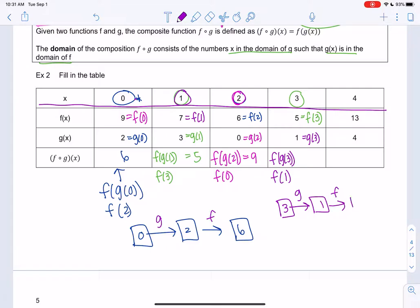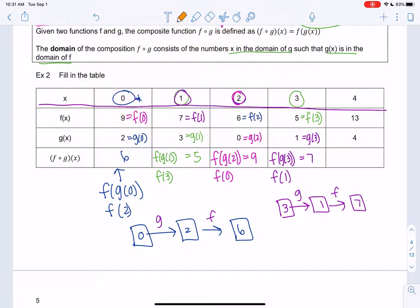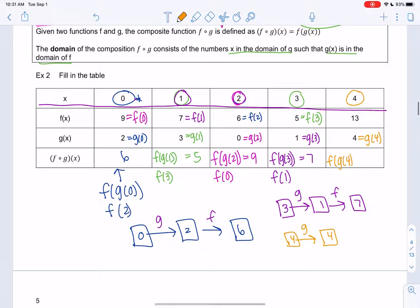So g takes us from 3 to 1 and then f takes us from 1 to 7. Here's 1, here's f. All right, final one. There's lots of colors. What color have we not done? Orange. So the final one is f of g of 4. So we're going to start with 4. We're going to go in the g machine and we get 4 again because you see g of 4 is 4. That's 4 in the f machine. We get, here's 4. We get 13.